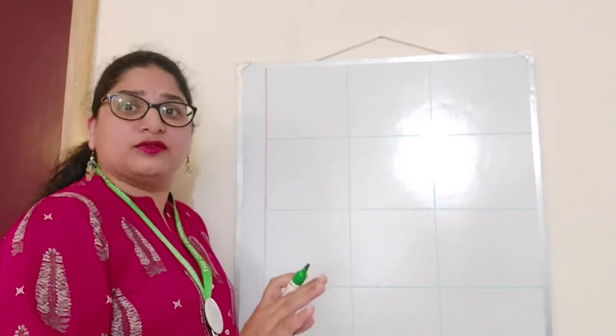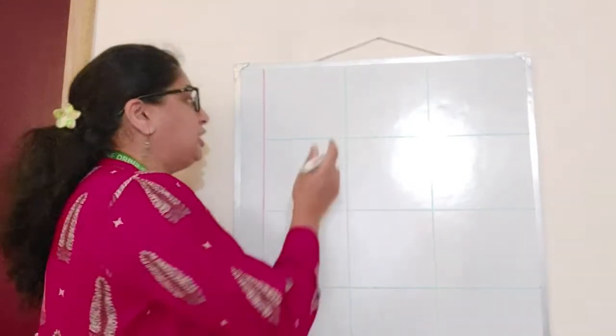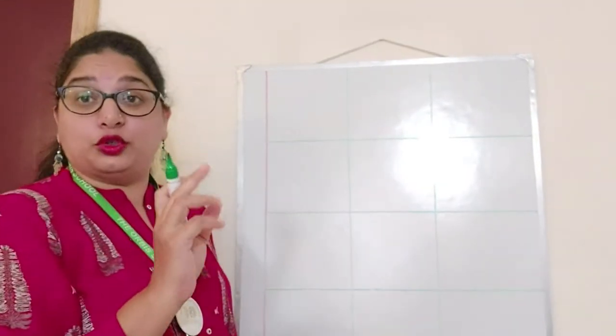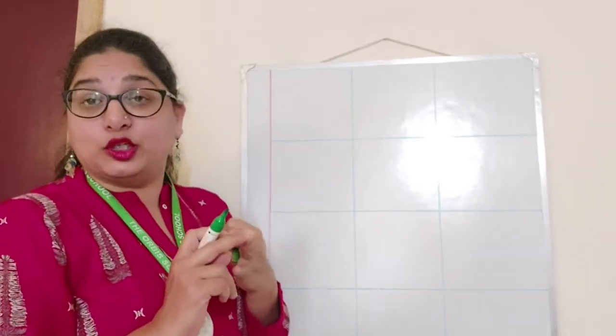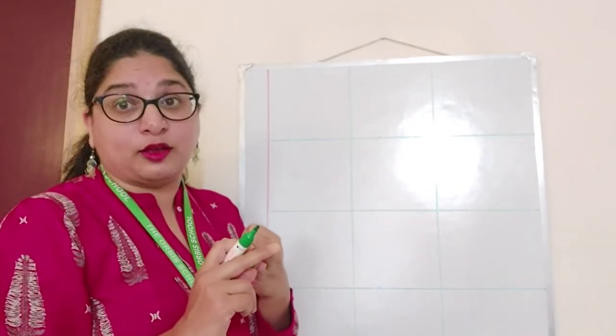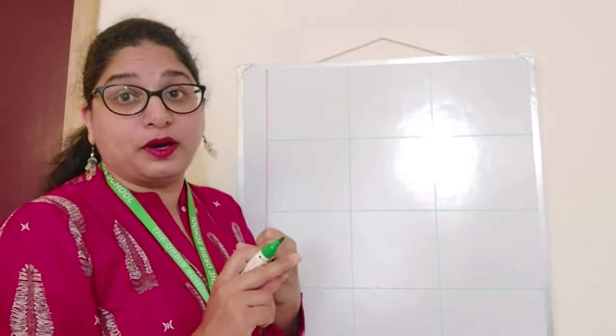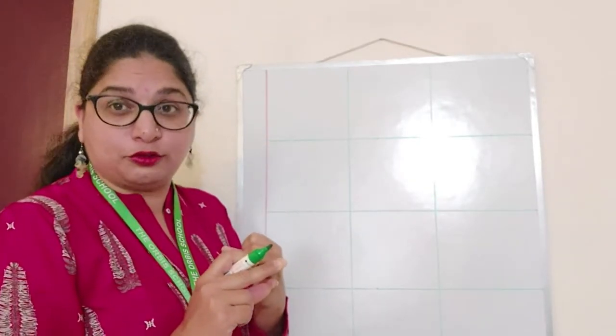Now, 1 and 2, it is very simple. You have learnt in the month of June. Number 1 you have learnt in the month of June and number 2 you have learnt in the month of June. So by now you must be perfect in writing number 1 and 2.